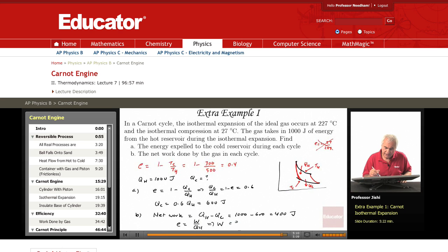Or you could say that efficiency is work over QH, so the work done is E times QH. 0.4 times a thousand, again you get 400 joules. Whichever way you do it, you get the same answer.